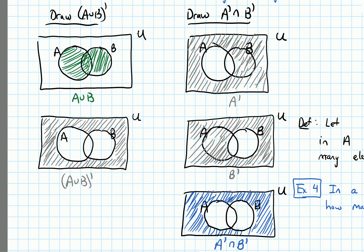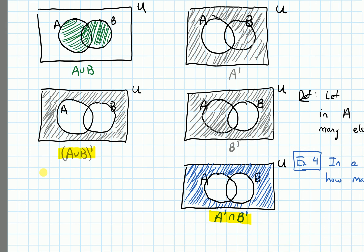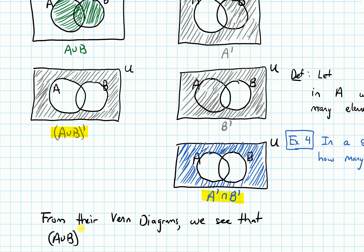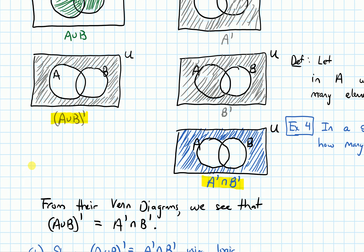From looking at these two Venn diagrams — the one of A union B complement and the one of A complement intersected with B complement — they look exactly the same; they have the same region shaded. So from their Venn diagrams, we see that A union B complement is equal to A complement intersected with B complement. That was part A of the question.